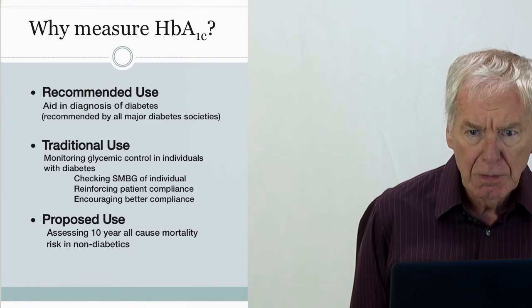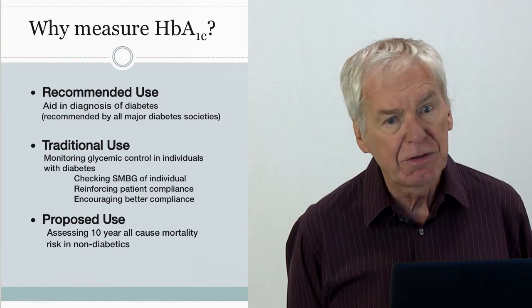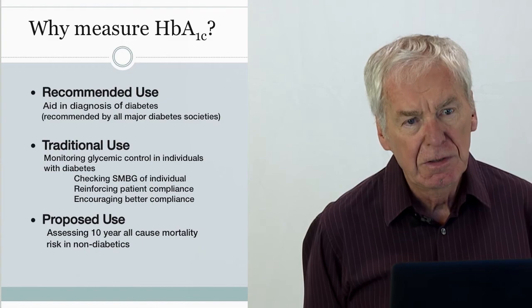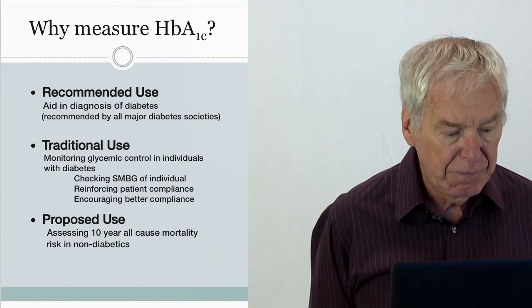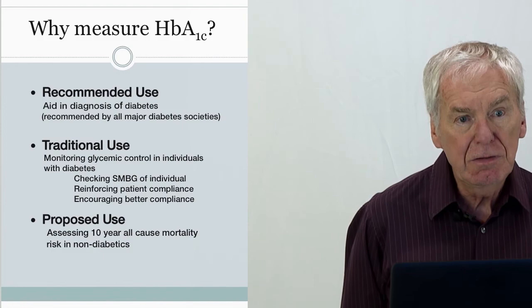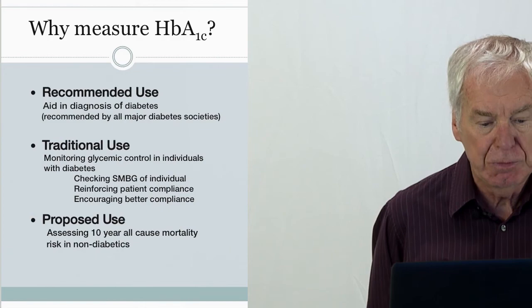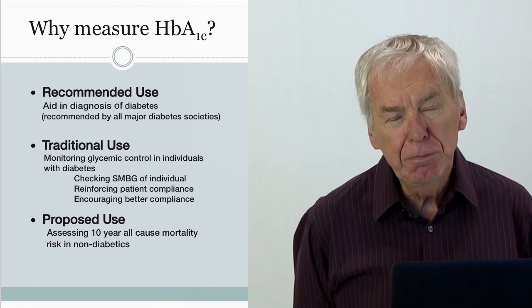So why do we measure A1c? First, it is recommended by all major diabetes societies in the Western world as an aid in the diagnosis of diabetes. The more traditional use is to monitor glycemic control in individuals who have diabetes — checking the self-monitoring blood glucose device against hemoglobin A1c, then either reinforcing that the patient is doing well or encouraging them to do better.